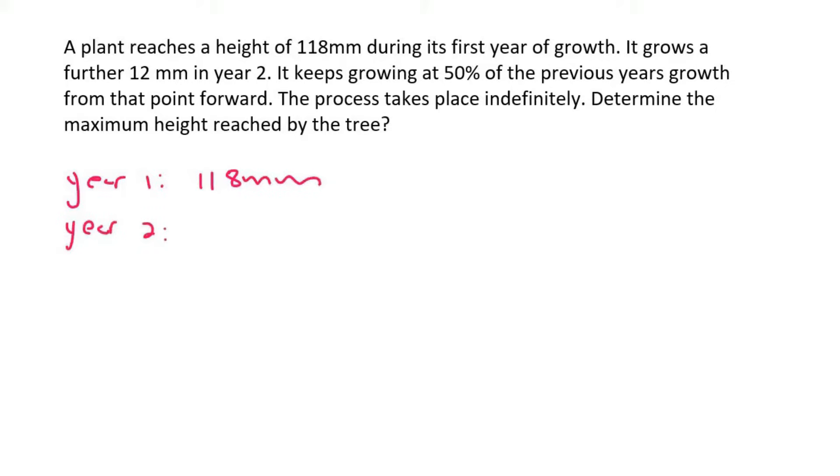and by the way if you've watched my previous questions on trees and things growing, you would see that we never look at the total height of the tree, we rather look at how much does the tree grow each year. That's where the ratio will be found. In the second year it grows 12 millimeters. Notice how I don't add these two together because I want to see how much it grows each year.